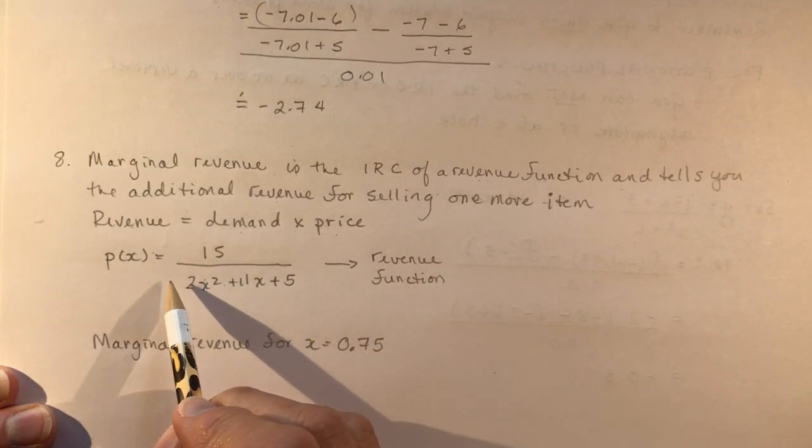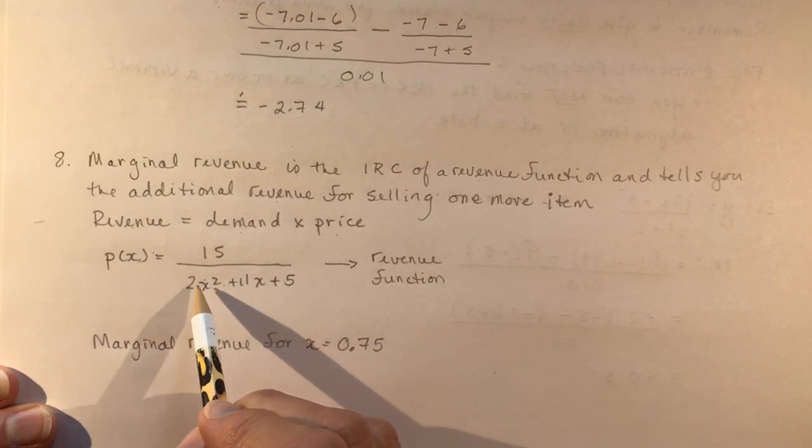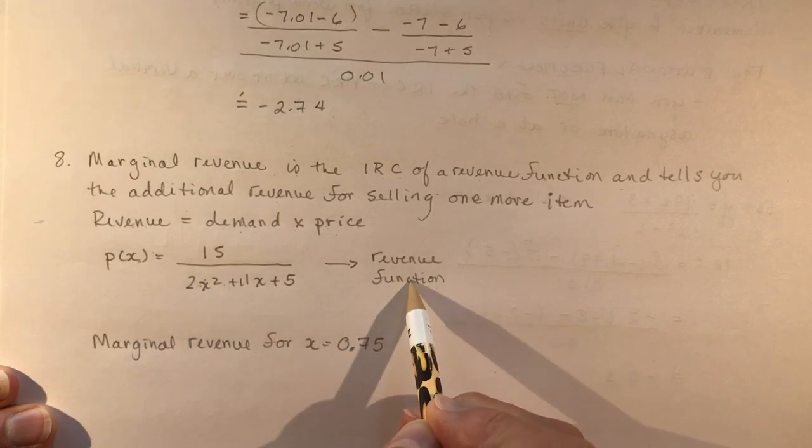So this is the revenue, the demand function. They want to know what the revenue function is, and I don't know what the price is, but in this case, they tell you that the price is X.